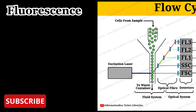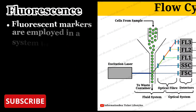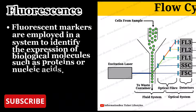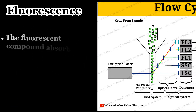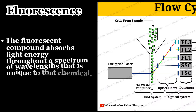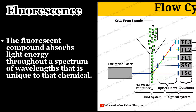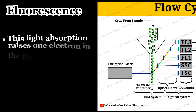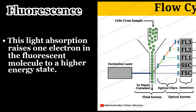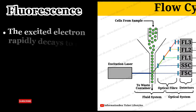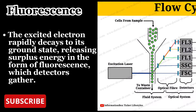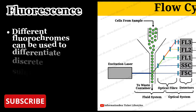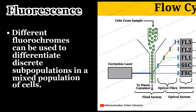Now let's understand what fluorescence is. Fluorescent markers are employed in the system to identify the expression of biological molecules such as proteins or nucleic acids. The fluorescent compound absorbs light energy throughout a spectrum of wavelengths unique to that chemical. This light absorption raises one electron in the fluorescent molecule to a higher energy state. The excited electron rapidly decays to its ground state, releasing surplus energy in the form of fluorescence, which detectors gather. Different fluorochromes can be used to differentiate discrete subpopulations in a mixed population of cells.